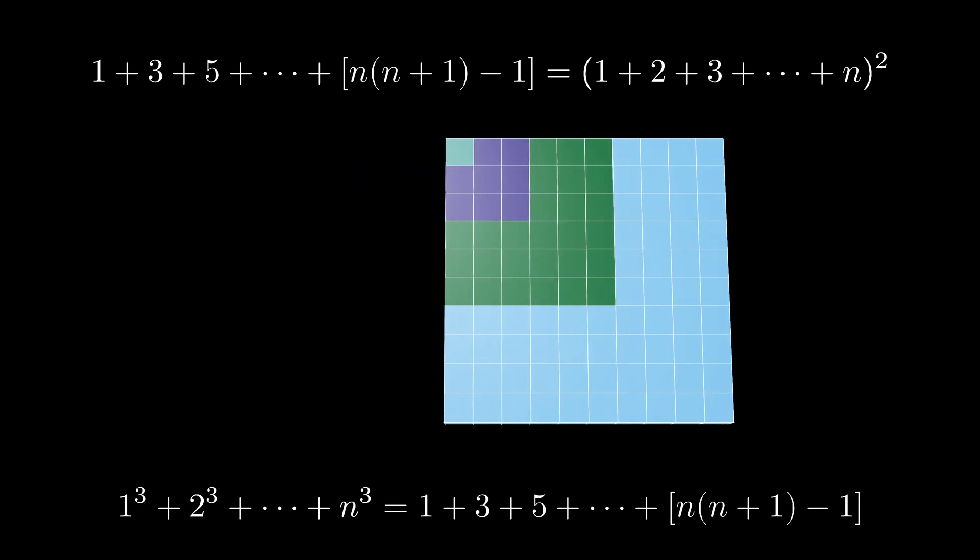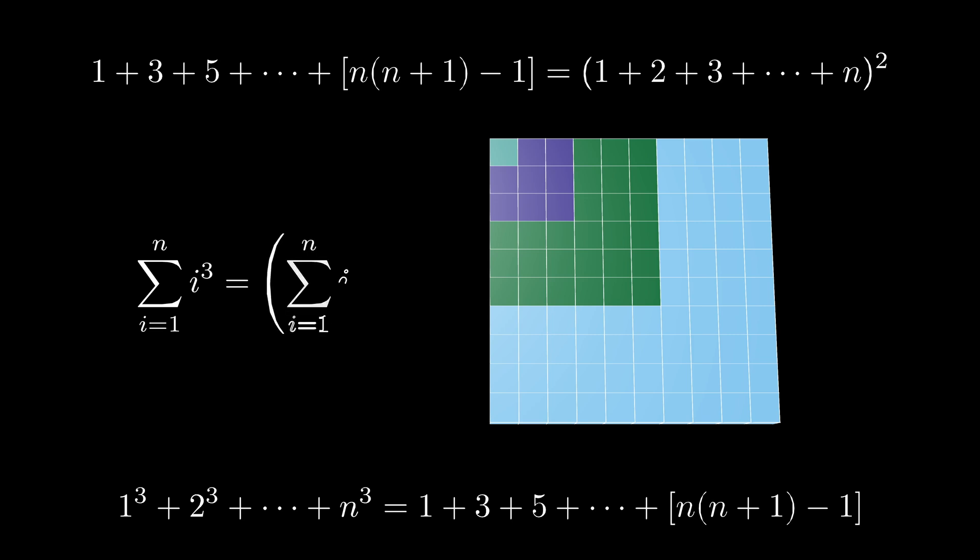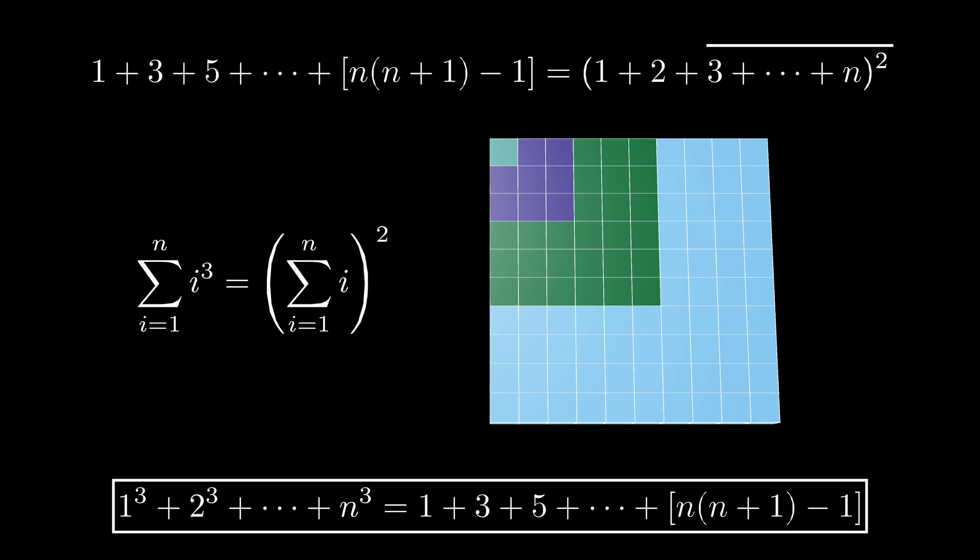But then we can finish this off by connecting the first and last formulas, so that we see that the sum of the first n positive cubes must equal the square of the sum of the first n positive integers.